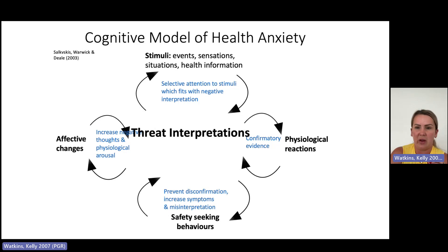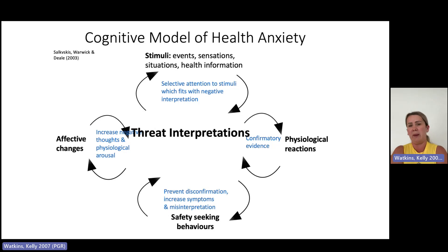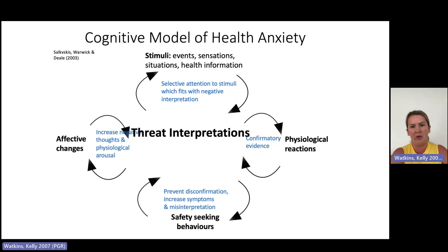The next cycle down is the confirmatory evidence — anything that happens physiologically then proves that something isn't quite right. This further increases the threat they're experiencing. It could be breathlessness, or it could be a mole on their skin that they believe is definitely rising or changing, even though it may not be. Because of selective attention, they look at it and the physiological reaction — maybe thinking it's becoming more itchy — all confirms and fits with that selective interpretation.